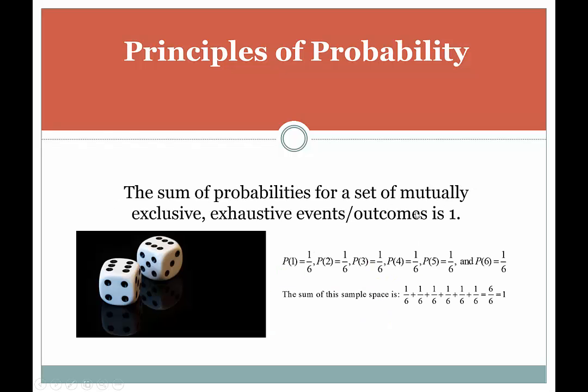Okay, the sum of the probabilities for a set of mutually exclusive, exhaustive events or outcomes is 1. So this is a mouthful, and I'm kind of trying to blend two different ideas here at once, but let me try to explain it to you so it makes intuitive sense.